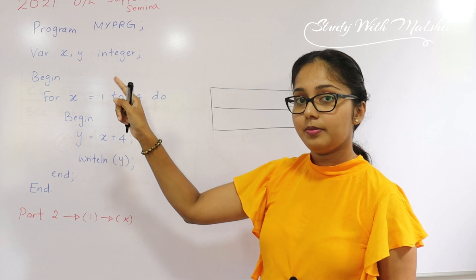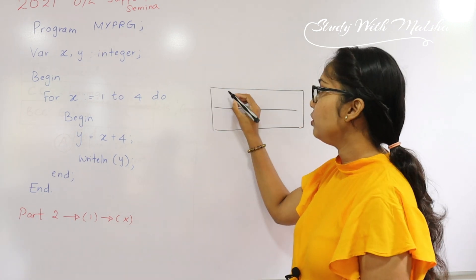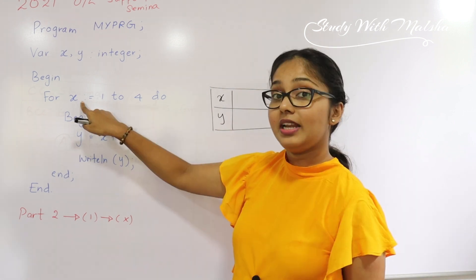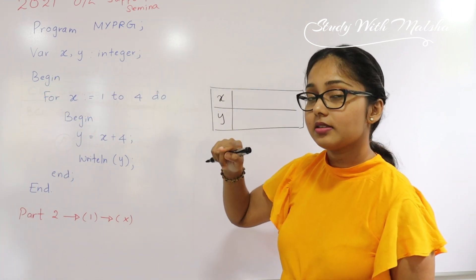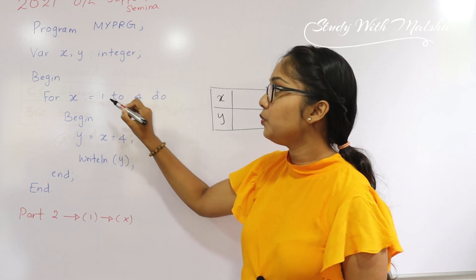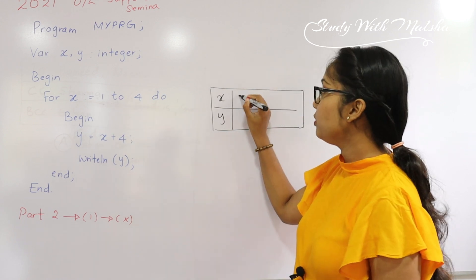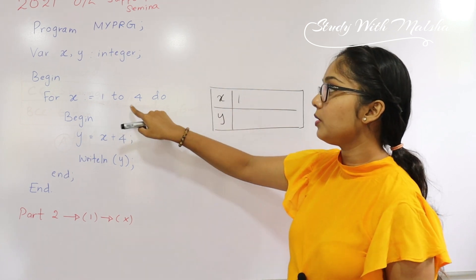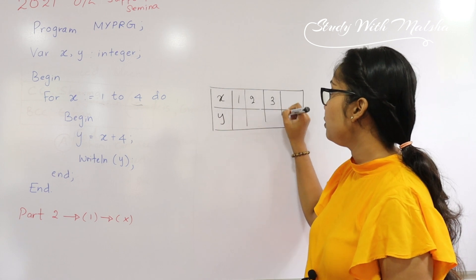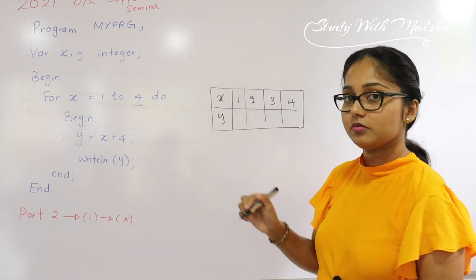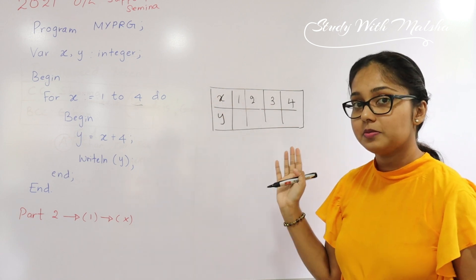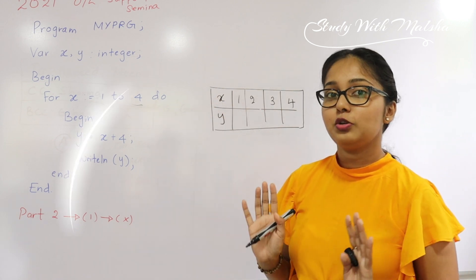In our for-do loop they said that our variable x is going to repeat four times and the starting value is one. I'm going to put one here and they are going to repeat it until four. So that means our x is gonna repeat four times: one, two, three, four. I took all the values for x. Now I have completed x, I hope no doubts about x.